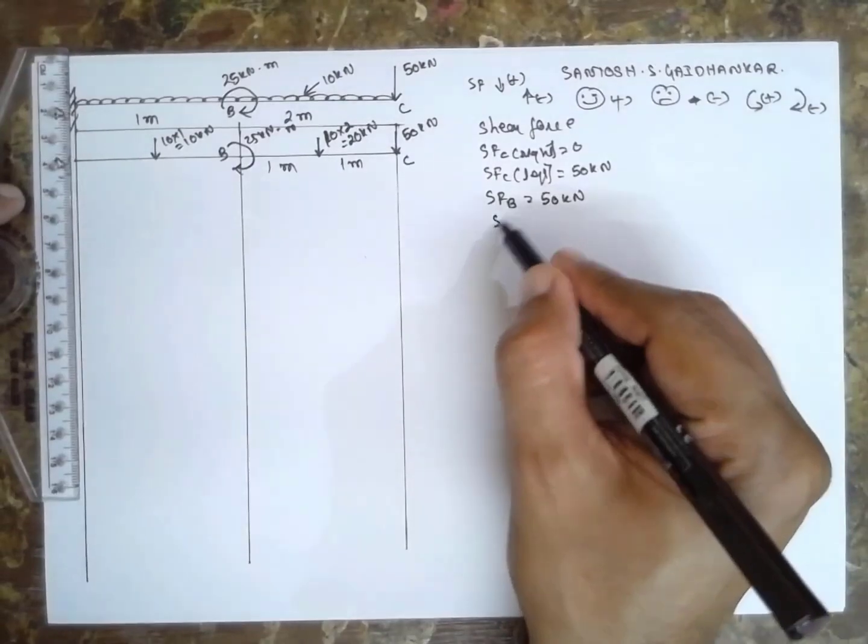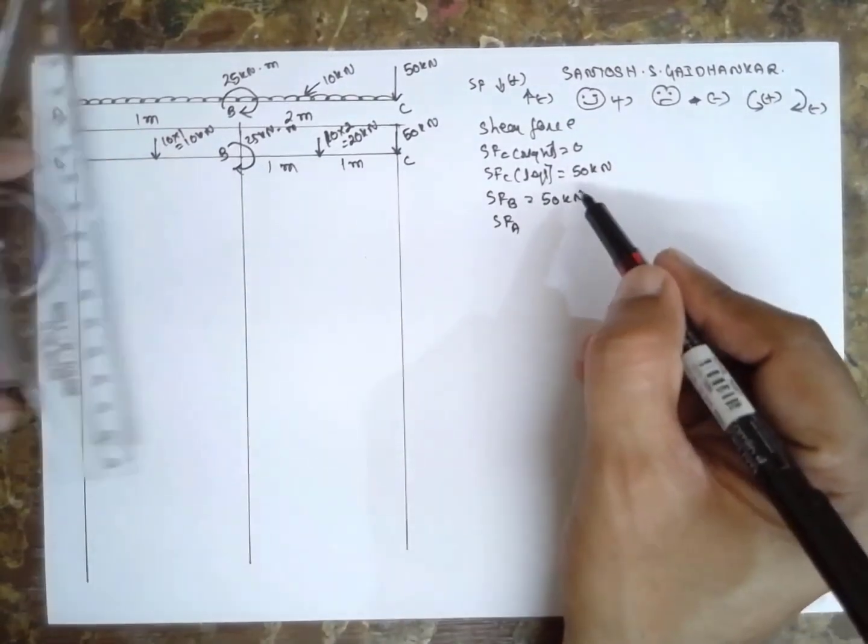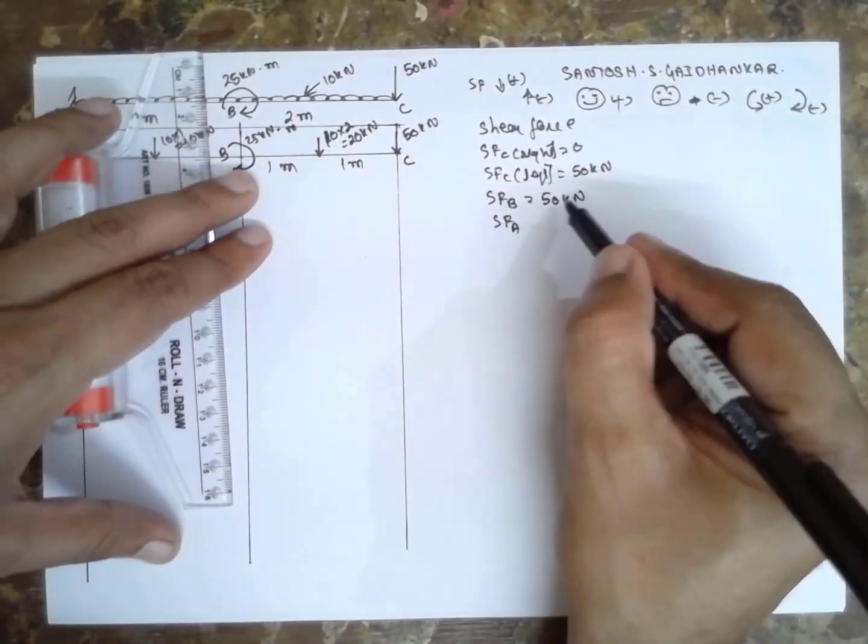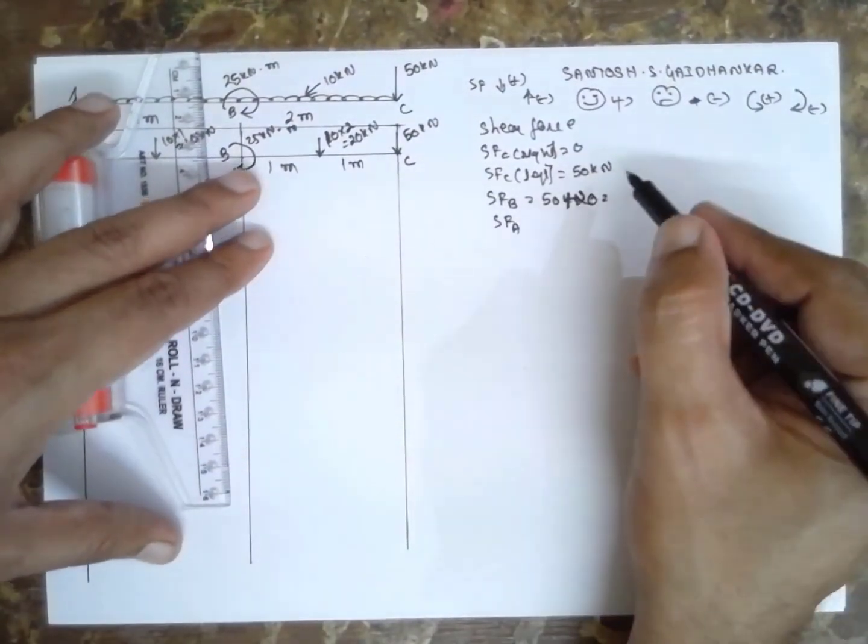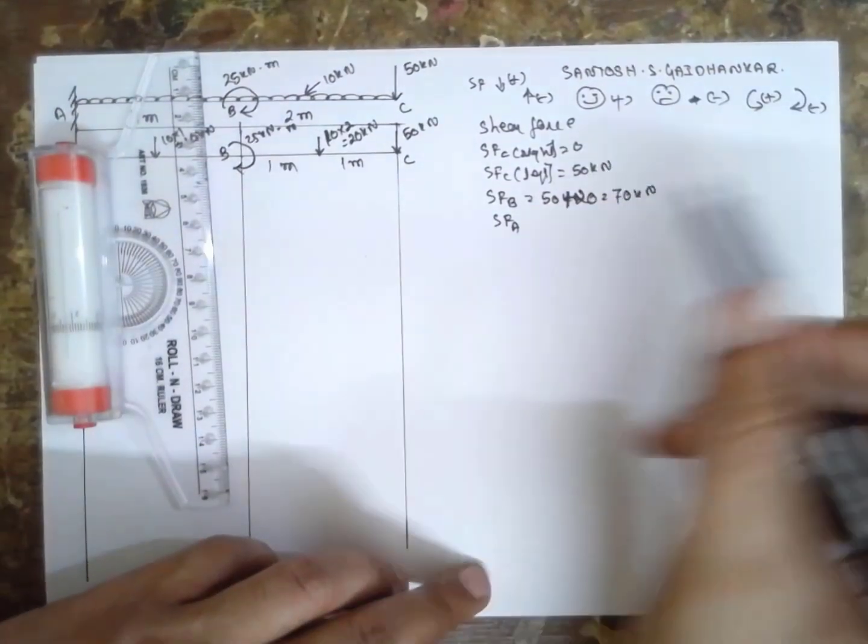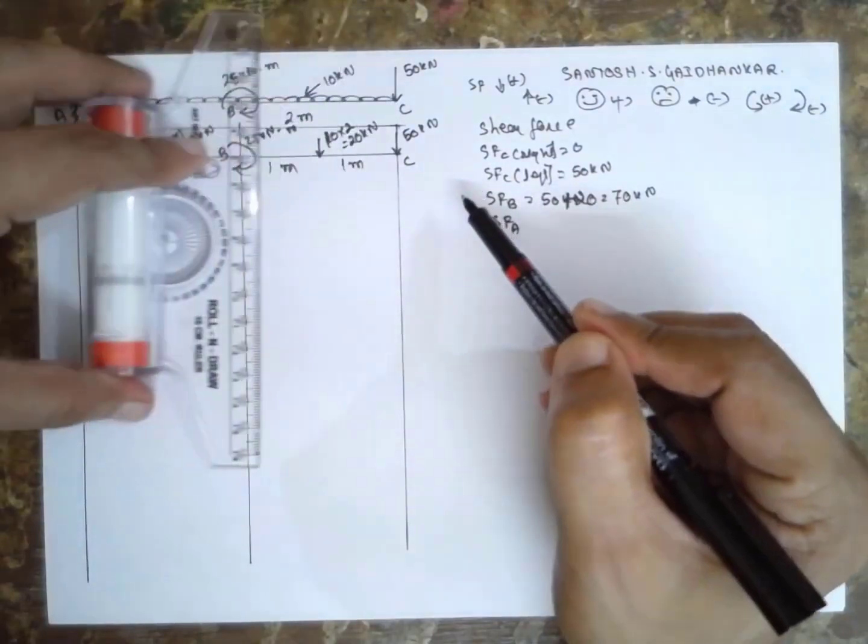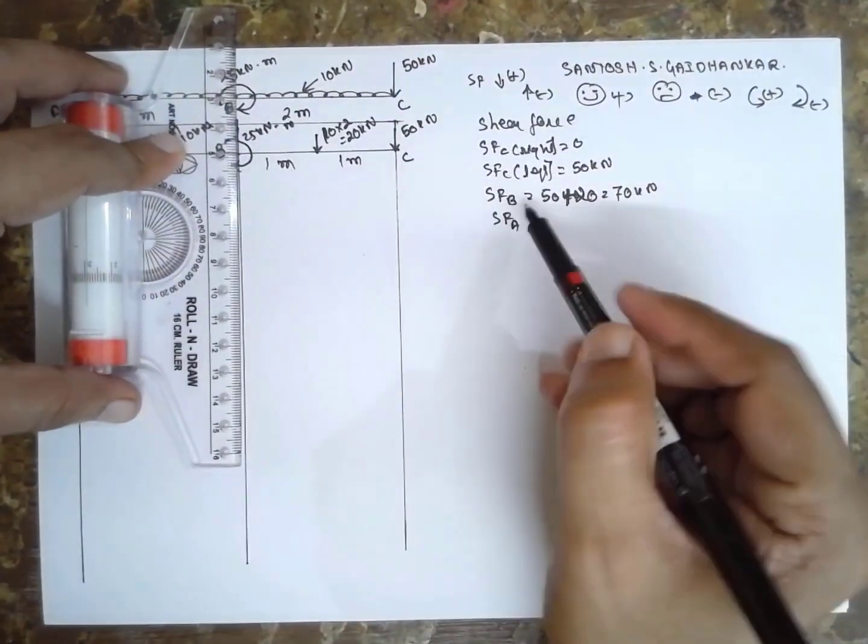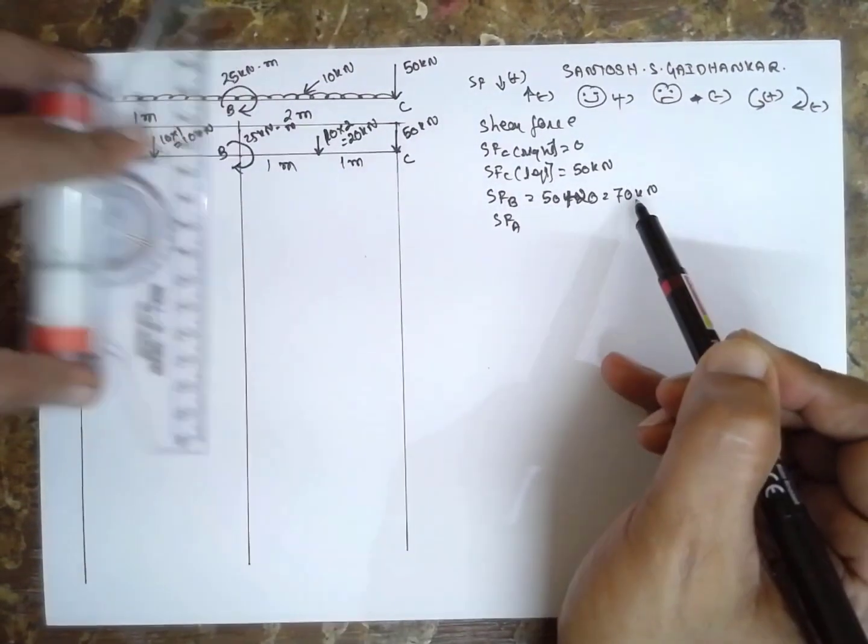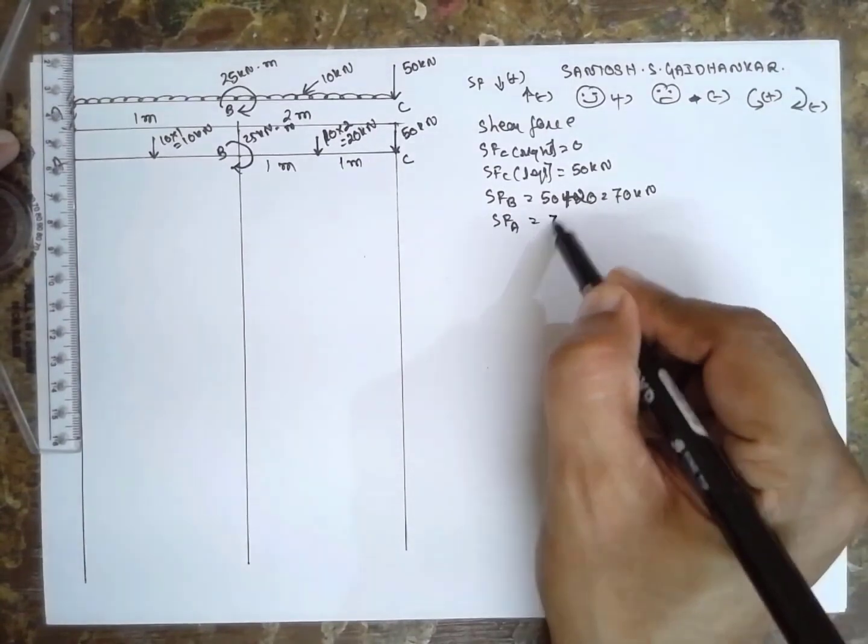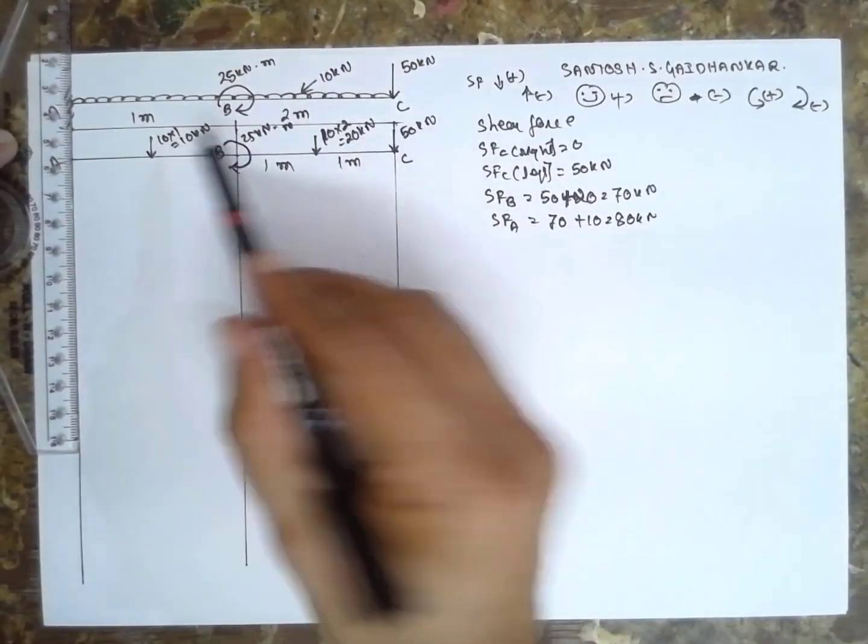Next at A, single letter because there is no load. This is 50, I made a mistake here. This is 50 plus 20 = 70 kN. At A single letter, previous value is 70 plus 10 = 80 kN. Or you can do 50 plus 20 plus 10, you will get the same answer.